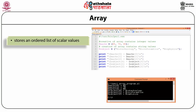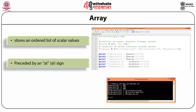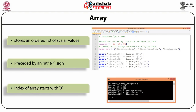An array is a variable that stores an ordered list of scalar values. Array variables are preceded by an at sign (@). To refer to a single element of an array, we use the dollar sign with the variable name followed by the index of the element in square brackets. Here, two arrays have been created: one with integer values and one with string values. Both arrays have three elements, so indexing will be 0, 1, and 2. To print the first element of the marks array, we write $marks[0]. The output will be marks[0] = 65, marks[1] = 70, etc.